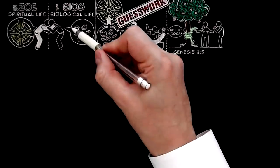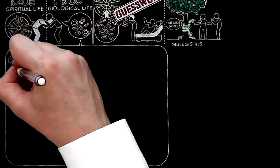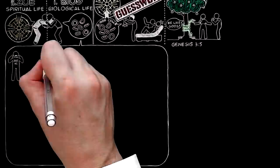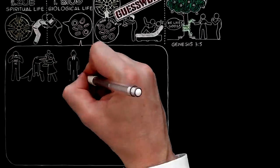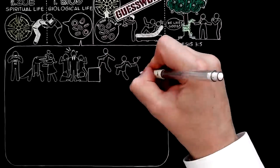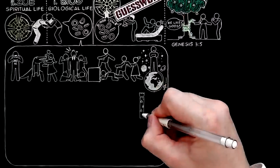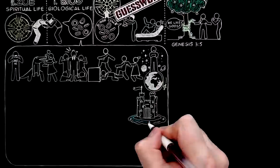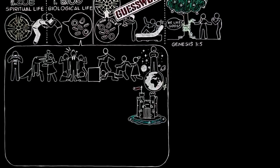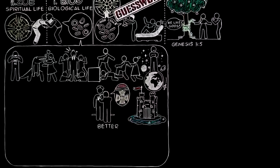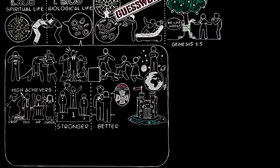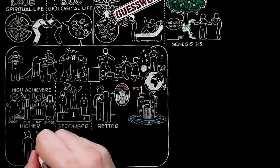The natural life in each of us is something self-centred, something that wants to be petted and admired, to take advantage of other lives, to exploit the whole universe, and especially it wants to be left to itself, to keep well away from anything better, or stronger, or higher than it, anything that might make it feel small.